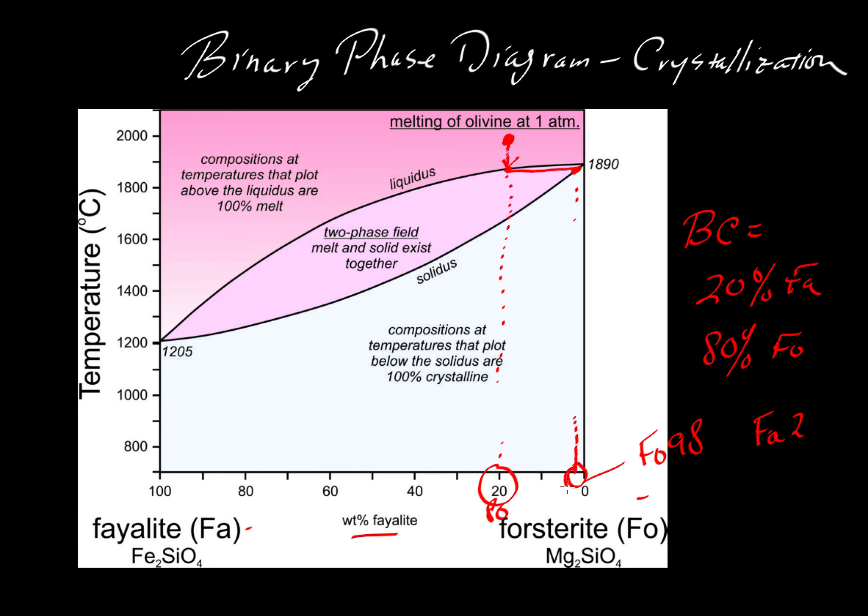Notice that the crystals are much more magnesium rich than the liquid, which should be no surprise when we looked at the melting case. The liquids were always more iron rich. Well if we're drawing magnesium out of the liquid by precipitating it, then the liquids are going to become more iron rich.